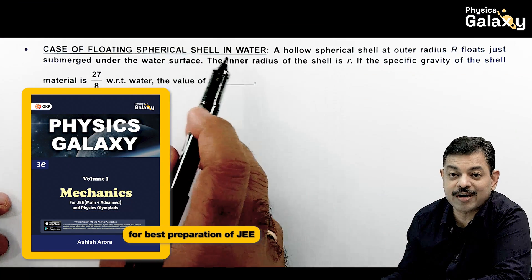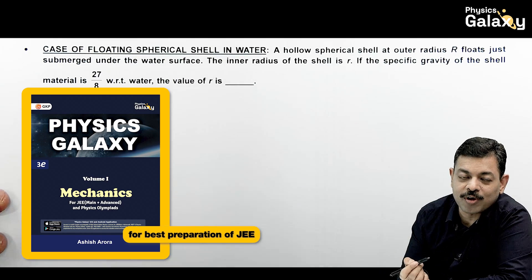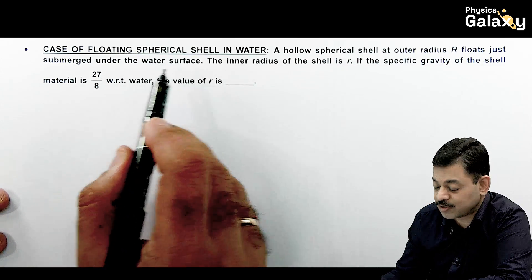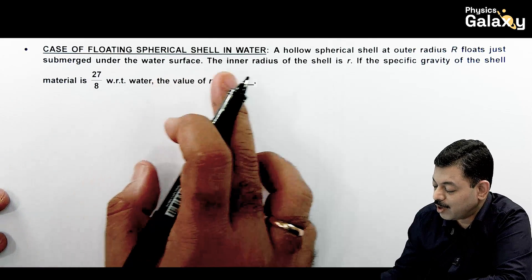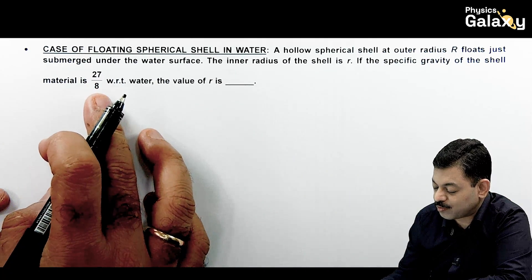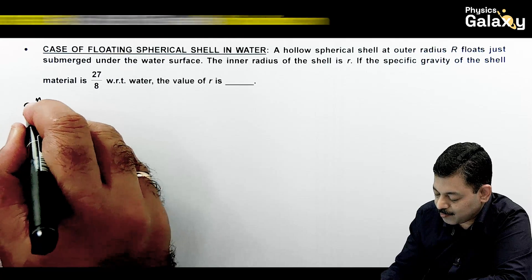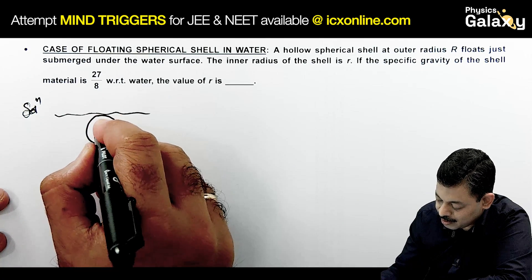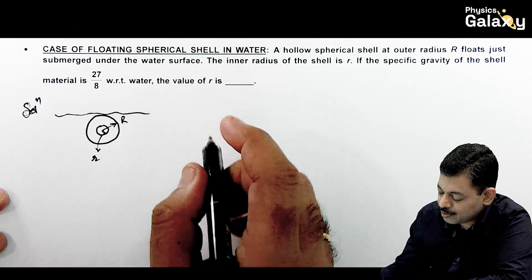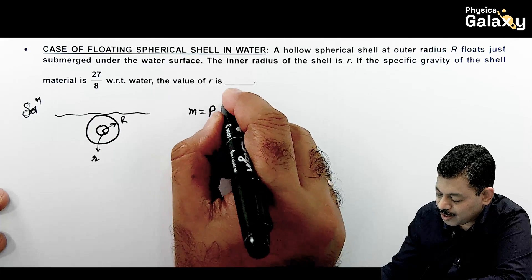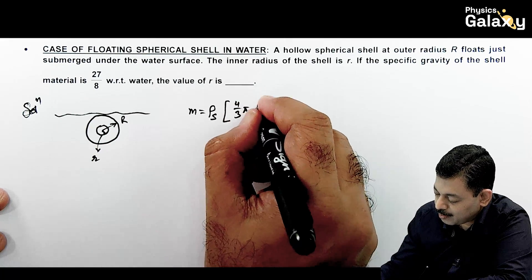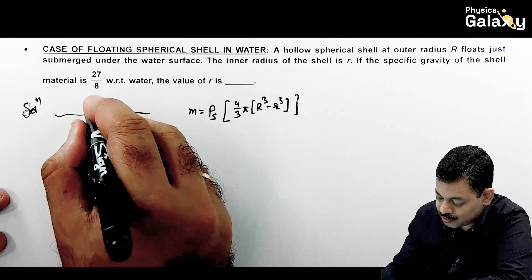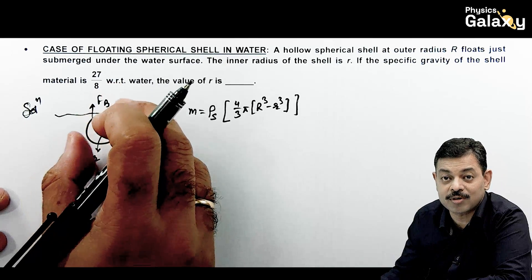Now we talk about the case of floating a hollow spherical shell in water. As discussed, the weight should be balanced by the buoyant force. A hollow spherical shell with outer radius R floats just submerged under the water surface, with inner radius r. The mass of the shell is ρ_solid × (4/3)π(R³ - r³). Its weight must balance the buoyancy, which equals the weight of displaced water of volume (4/3)πR³.